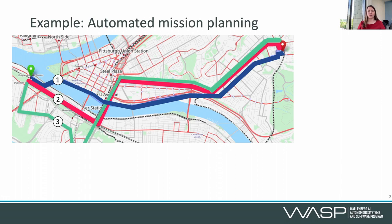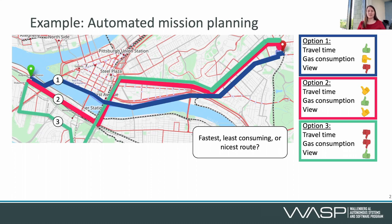As an example, we can consider an autonomous car that should move from a start location to a final destination. There are several potential options — for instance, it could choose the fastest route, the least consuming, or the nicest route. So there are different objectives of interest: travel time, gas consumption, and view. It's important to understand what priorities these objectives should have. Maybe the default would be that all of them have the same priority, and in that case the system would choose option 2, which is the best overall balance of objectives.